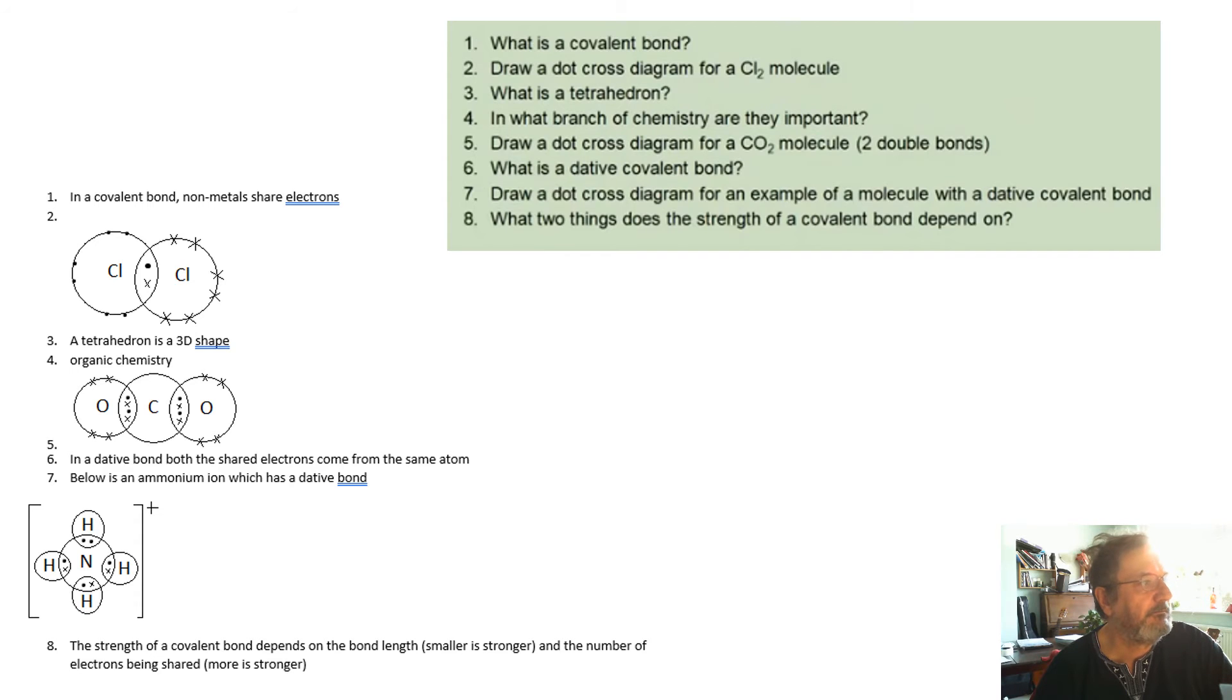The strength of a covalent bond depends on the length of the bond. The smaller it is, the stronger it is, because the opposite charges are closer together. And the number of electrons being shared, as in a double bond is stronger than a single bond, and then a triple bond is stronger than that.